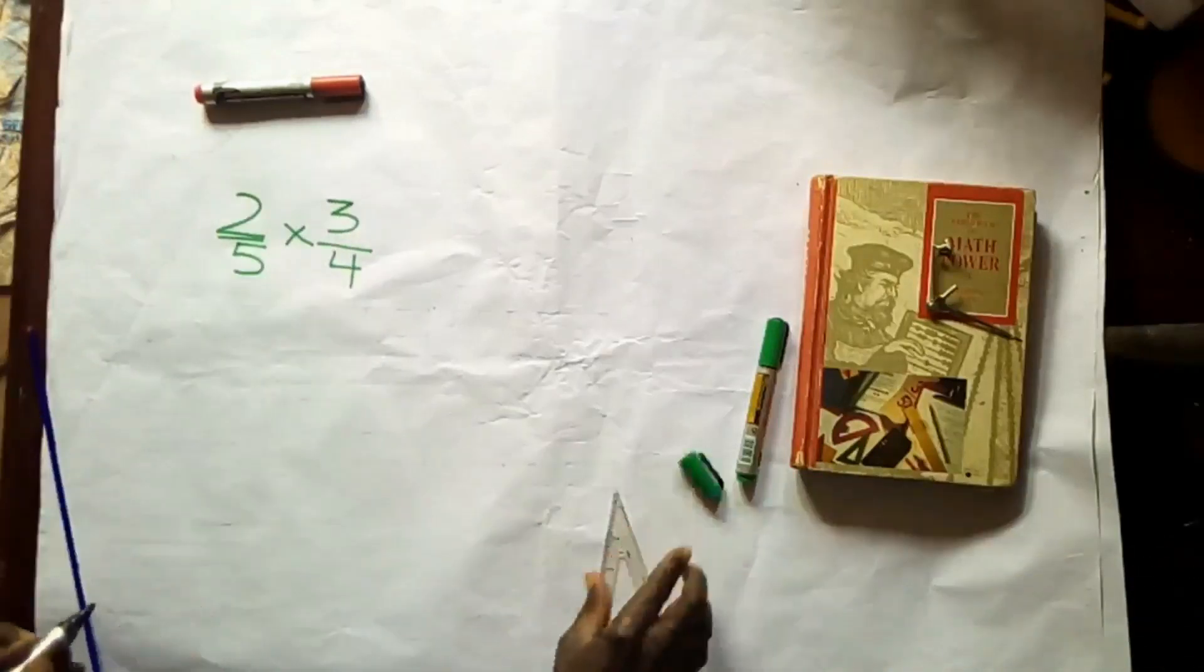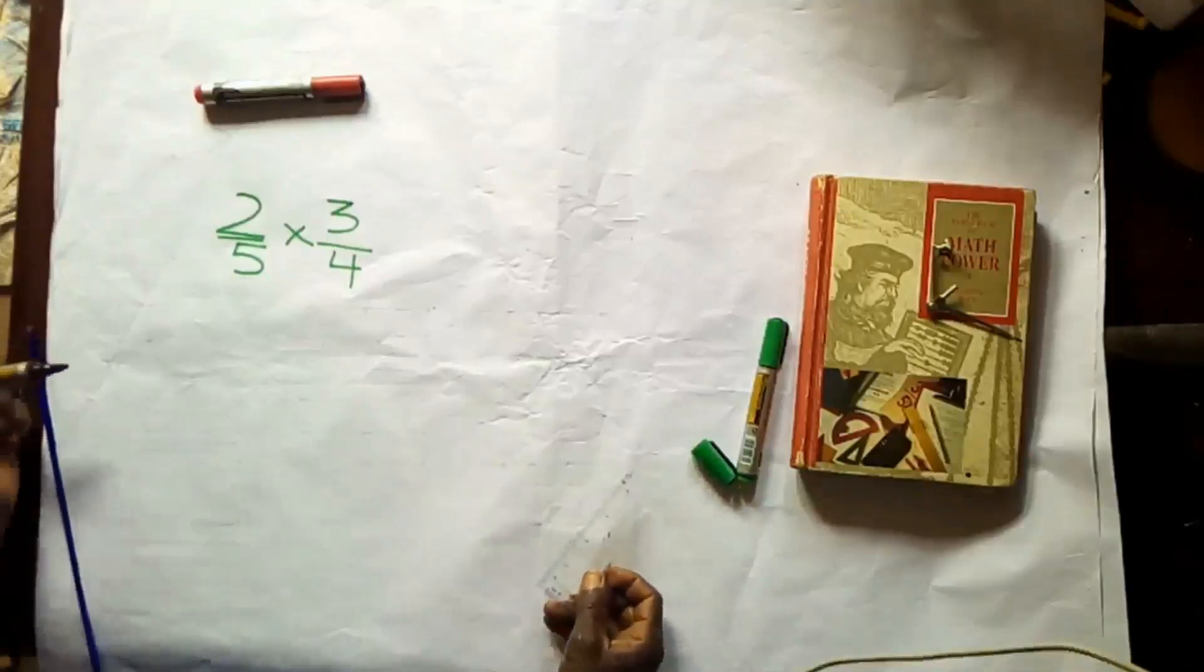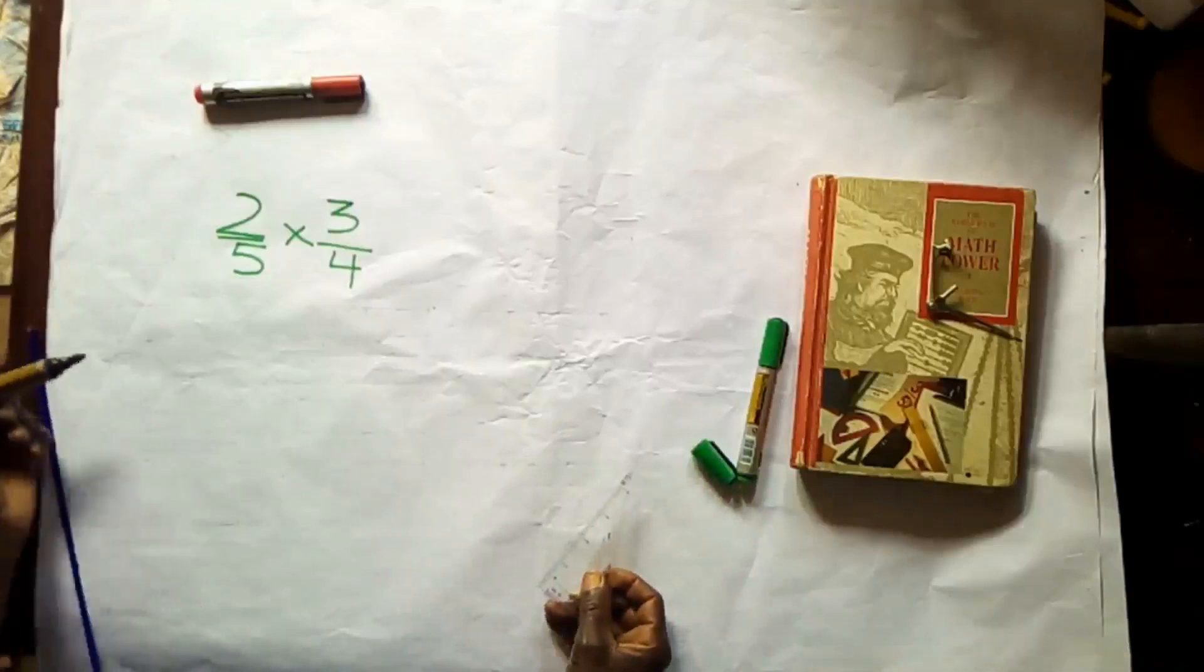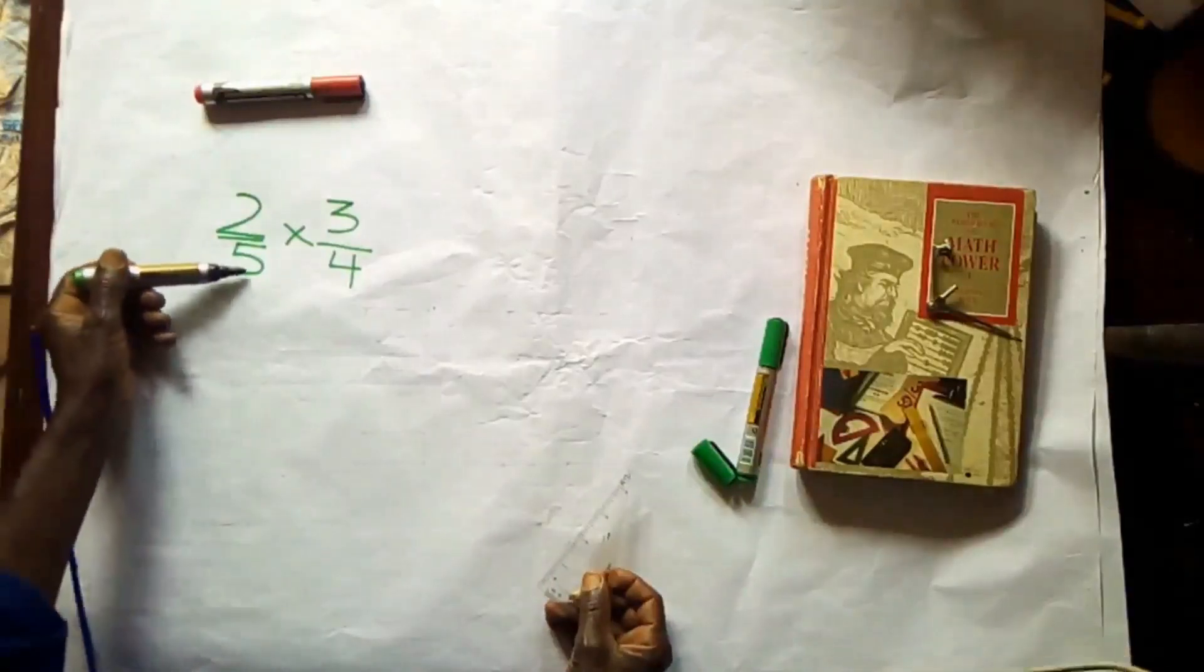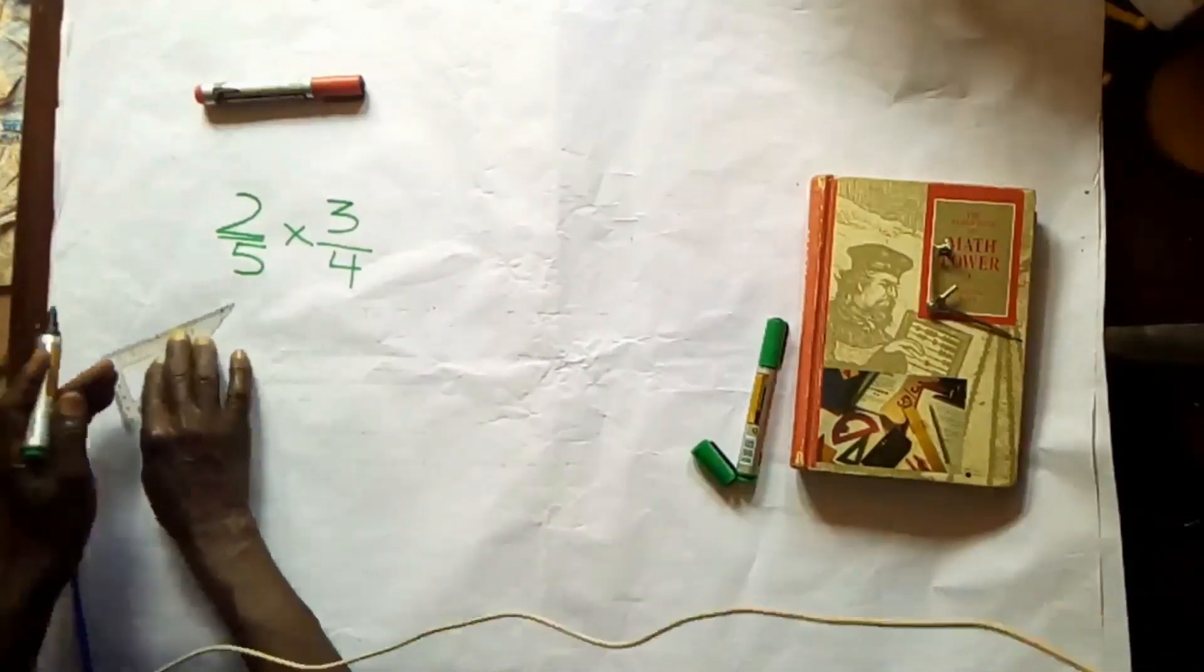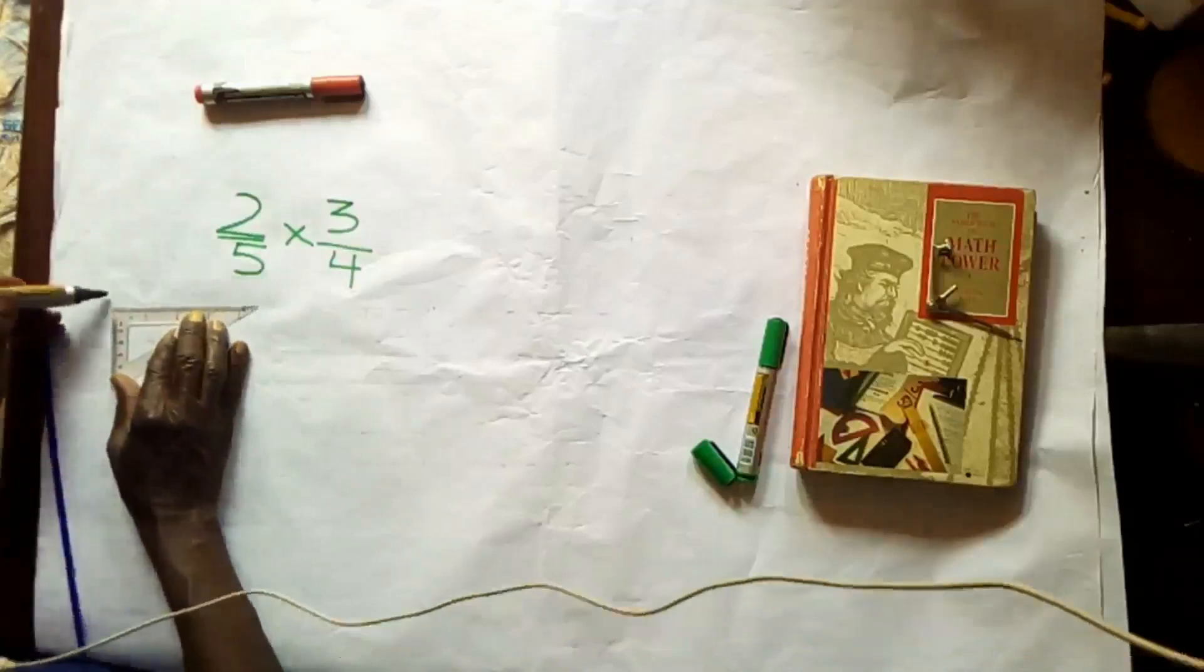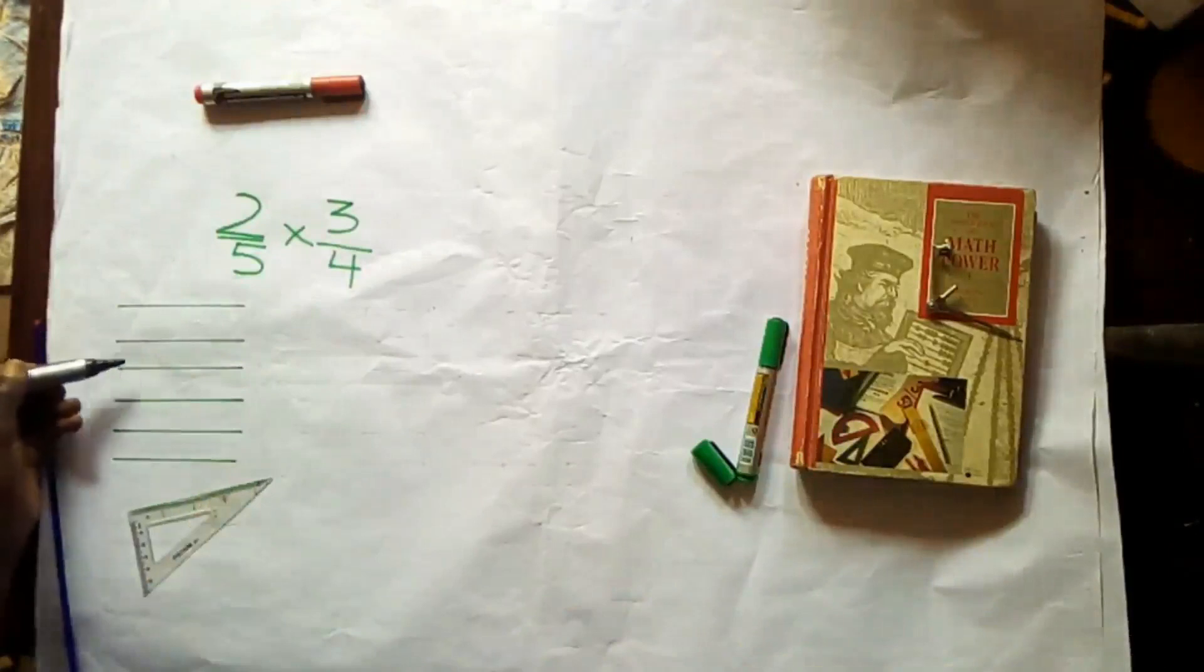To start with, we draw our area having five rows representing the denominator: one, two, three, four, five rows.